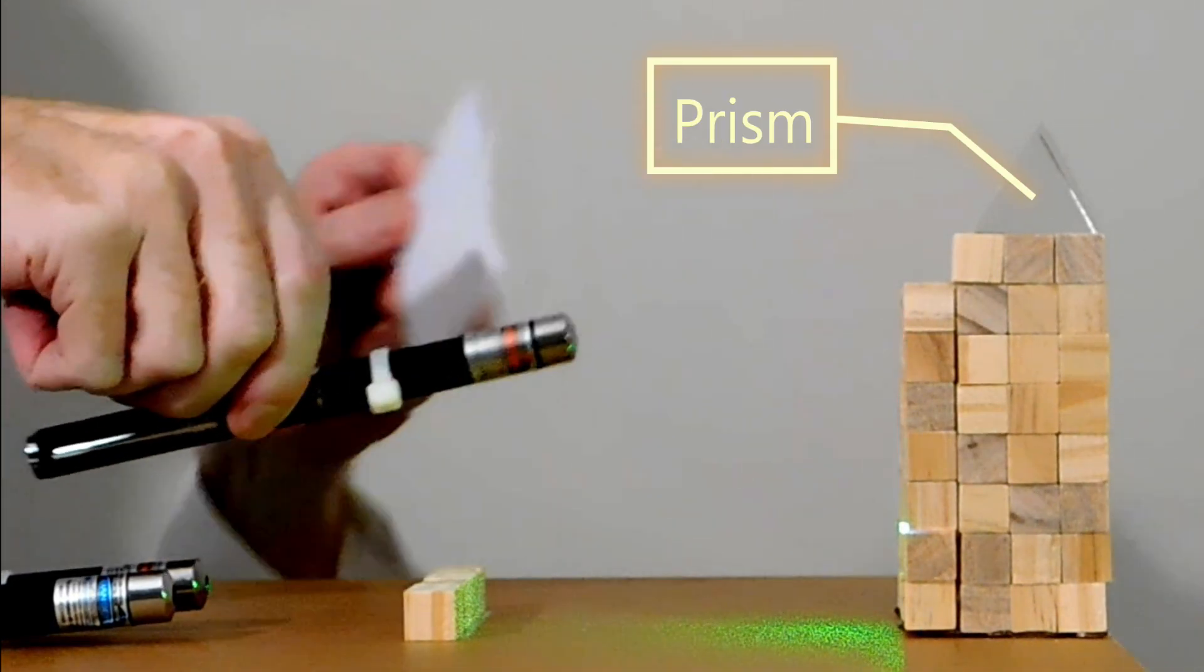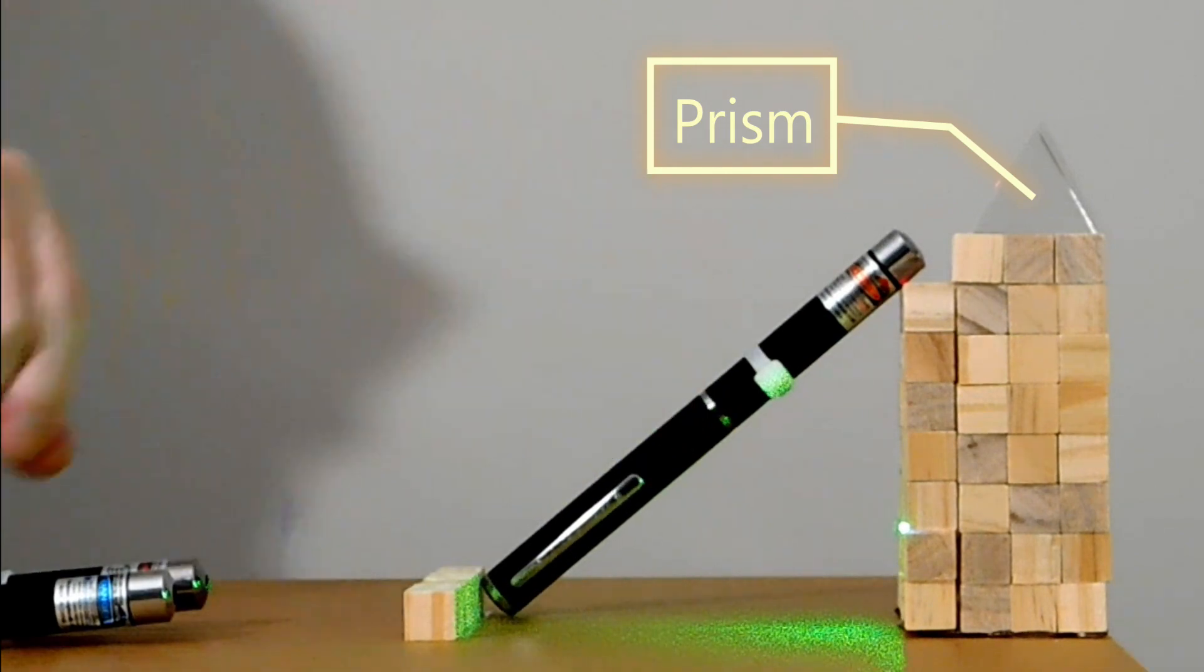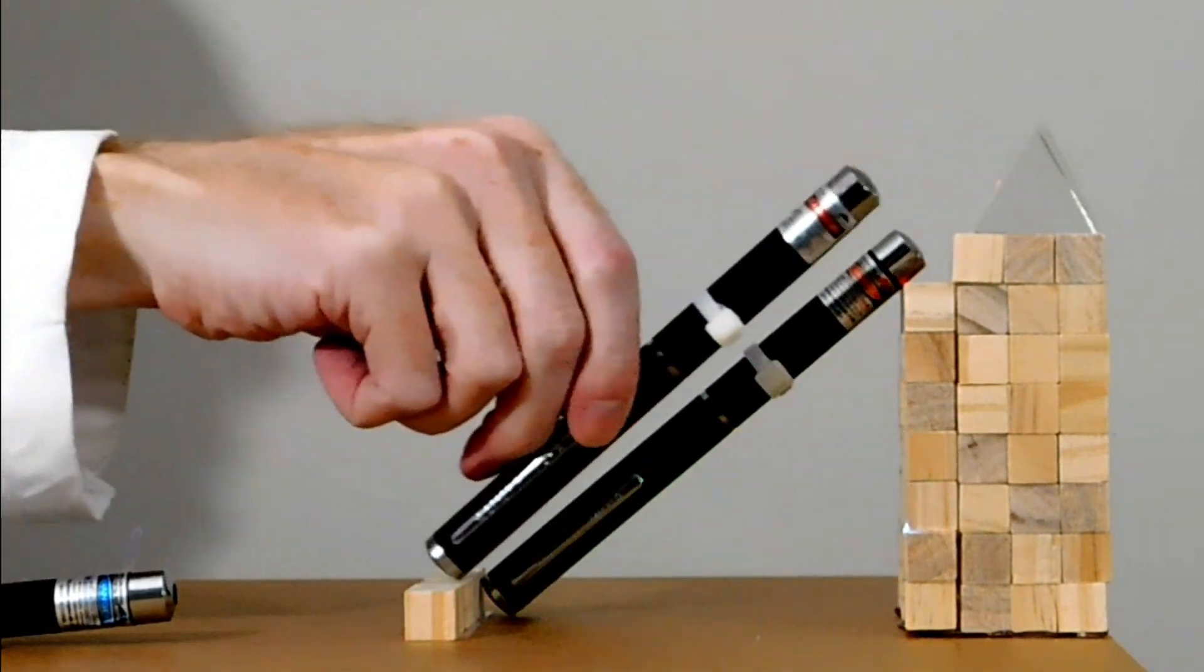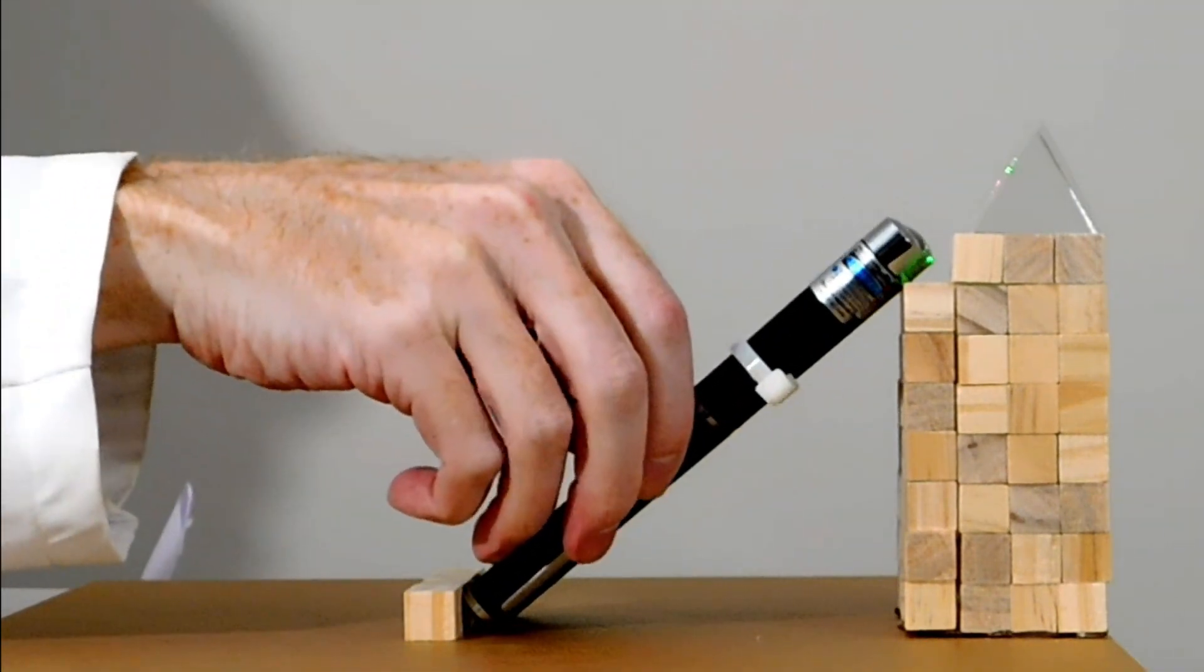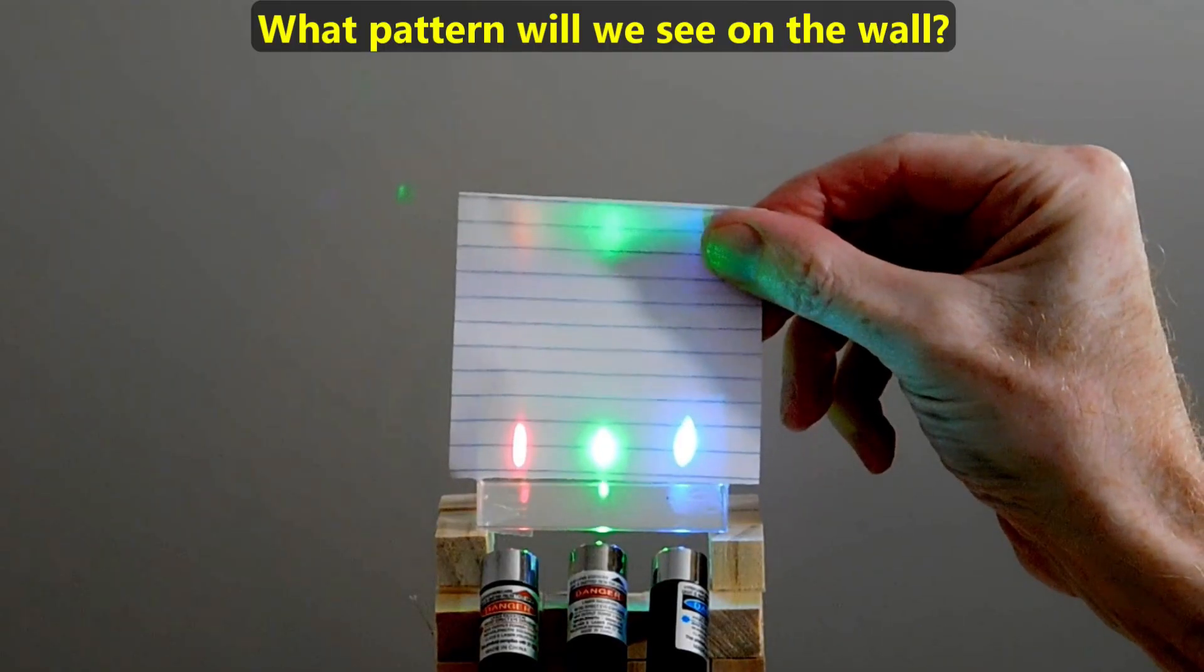Instead of shining white light through this prism, which would contain about 400 unique colors of light, we'll shine just red, green, and violet. They enter at exactly the same angle and at the same level on the prism. What pattern do you think we'll see on the wall?